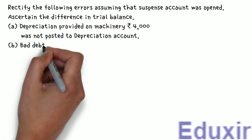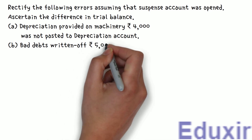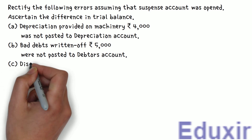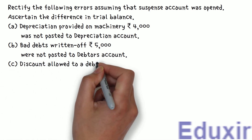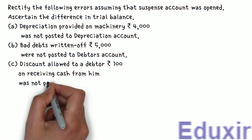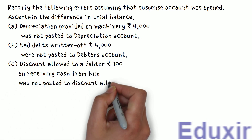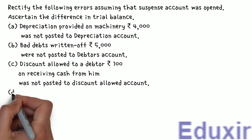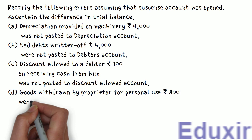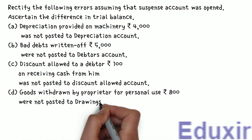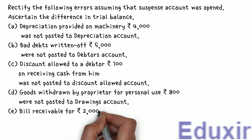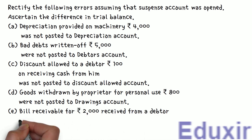B: Bad debts written off, 5000 rupees, were not posted to Debtors Account. C: Discount allowed to a debtor, 100 rupees, on receiving cash from him was not posted to Discount Allowed Account. D: Goods withdrawn by proprietor for personal use, 800 rupees, were not posted to Drawings Account. E: Bill receivable for 2000 rupees received from a debtor was not posted to Bills Receivable Account.